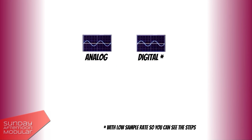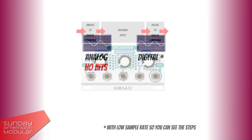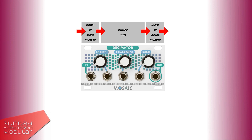Now you cannot BitCrush an analog audio signal as it has no bits. So if you have a BitCrush module it will always convert the incoming analog audio signal to a digital one — to zeros and ones. Then you can alter and crush the digital audio signal and after that it will be converted to an analog audio signal again.